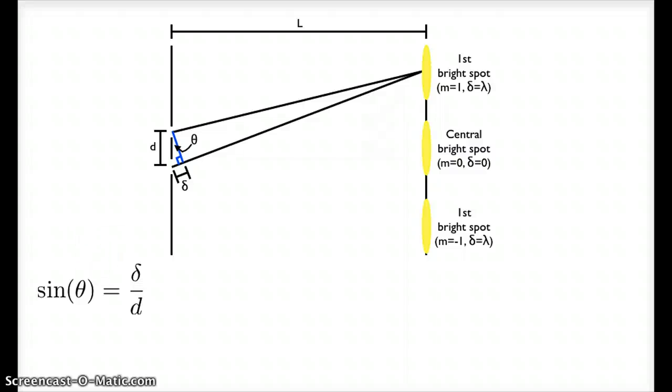So there's one triangle. The next triangle I want to make goes from the center of the two slits right across to the central bright spot and from the center of the two slits up to whatever point on the screen I'm interested in. And it turns out if we do a little geometry that the angle here in this triangle is the same theta as we had on the previous slide.